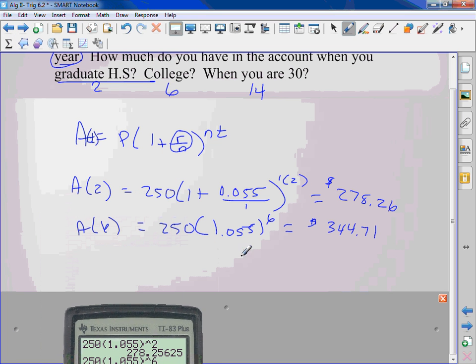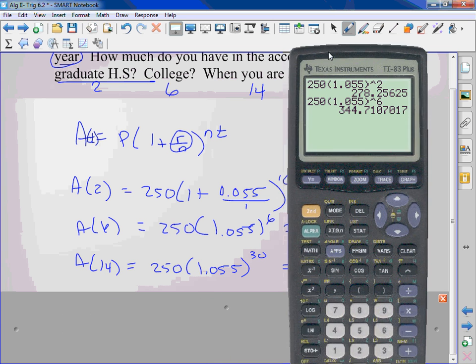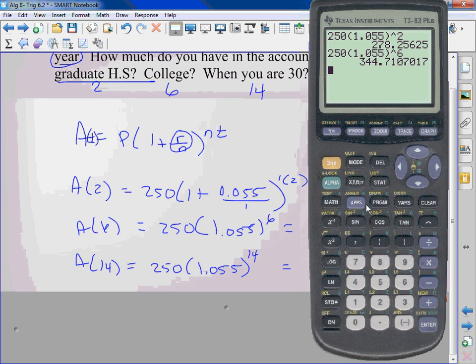Right here. 1 plus 0.055 I just add it together. We would take it divided by 2 yeah it would be different. It would be this number divided by 2. A of 14 so once you turn 30, 250... I put in 30, or not 30 sorry 14 I messed up. All right second enter change this to a 14 so if I didn't touch this money at all I just left it in there when I turned 30 there is now...